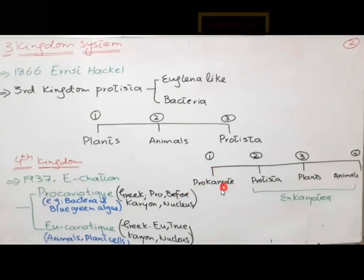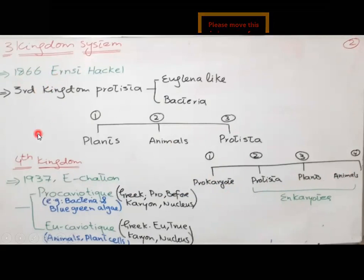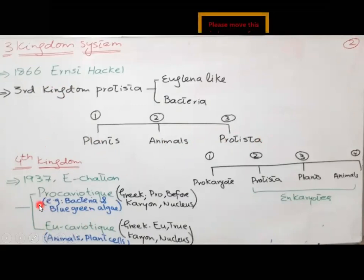Prokaryotes are those which do not have a definite nucleus, whereas Protista, plants, and animals have a definite nucleus. For a short question on the three kingdom system, you can write: plants, animals, and Protista, with the objection that there was no place for prokaryotic and eukaryotic organisms in that system. For the four kingdom system, you can write who proposed it and that it involves the distinction of prokaryotic and eukaryotic organisms.